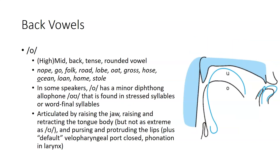The next lower back vowel is O. It is the higher of the mid-back vowels. It is tense and rounded, found in words like nope, go, folk, road, the first syllable in ocean, lone, home, stole. In some speakers, O is produced as a minor diphthong that tends toward the u position in stressed or word-final syllables.